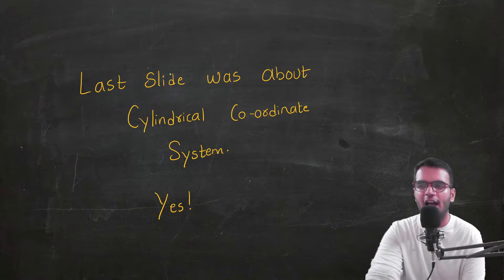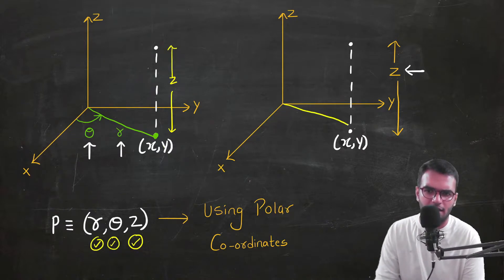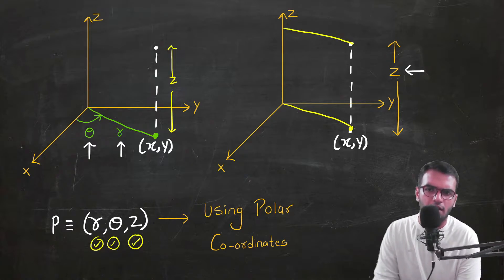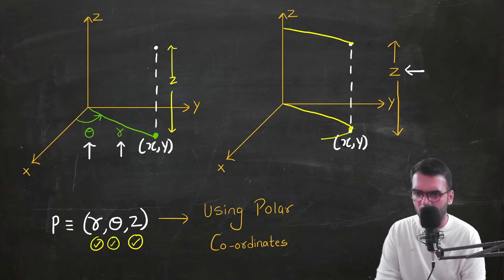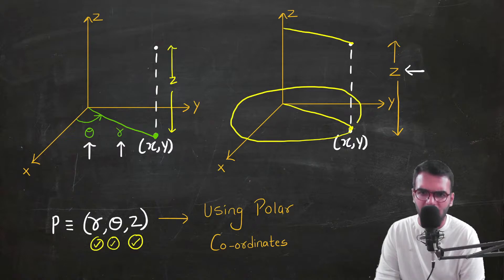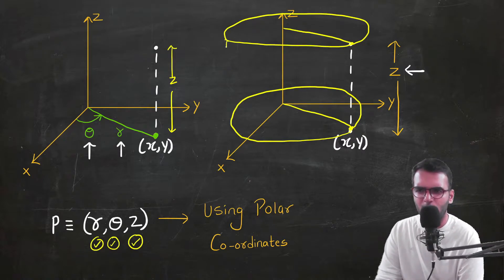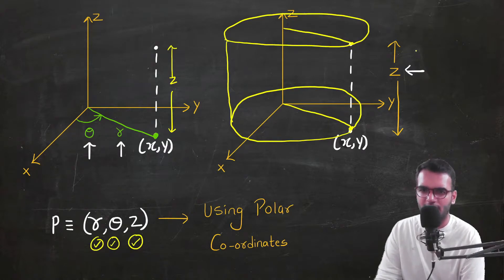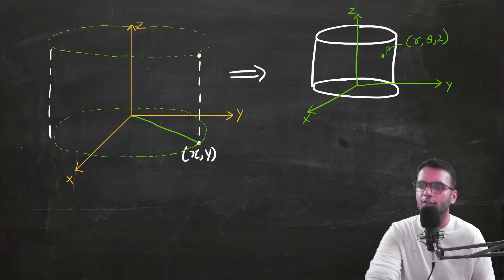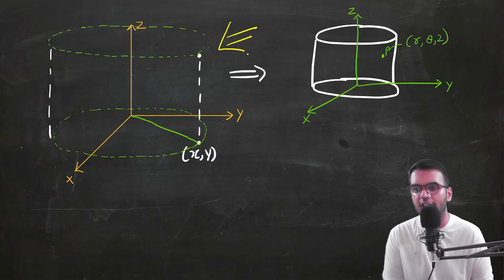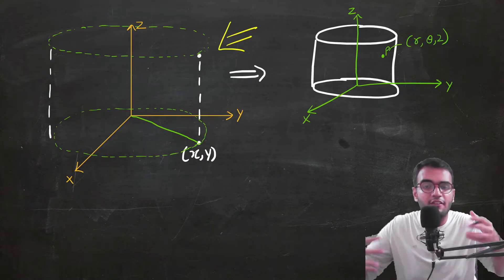This is indeed the cylindrical coordinate system. If we take the radius r in the xy-plane and rotate it 360 degrees, in the lower section and upper section we get a shape — and the height is z. The result is a proper cylinder! So a point in the cylindrical coordinate system requires three coordinates: r, theta, and z.